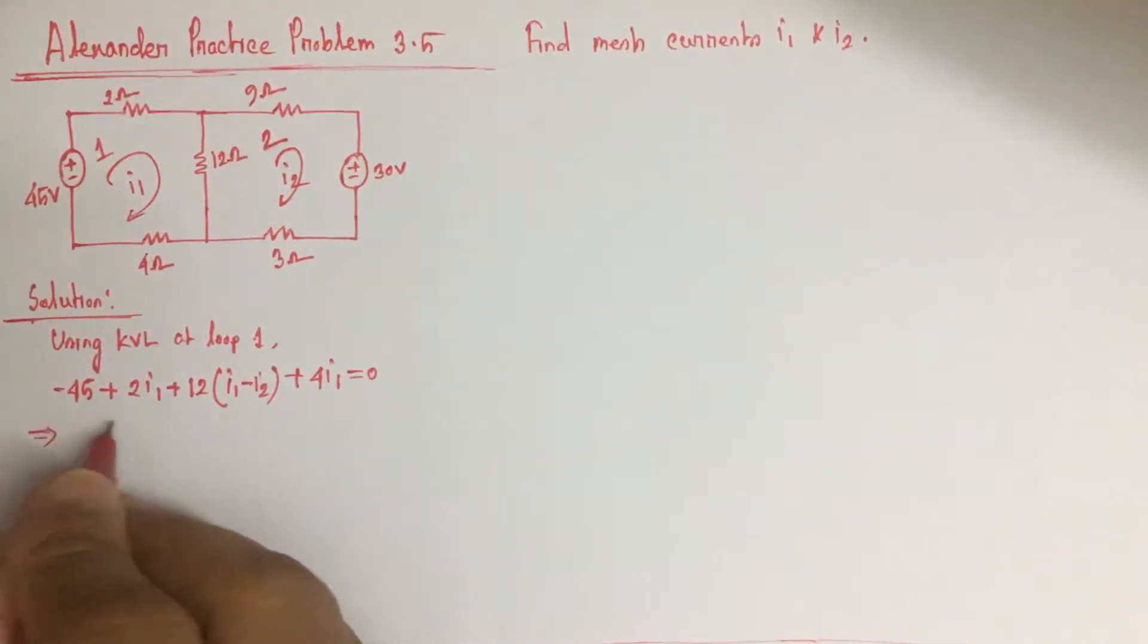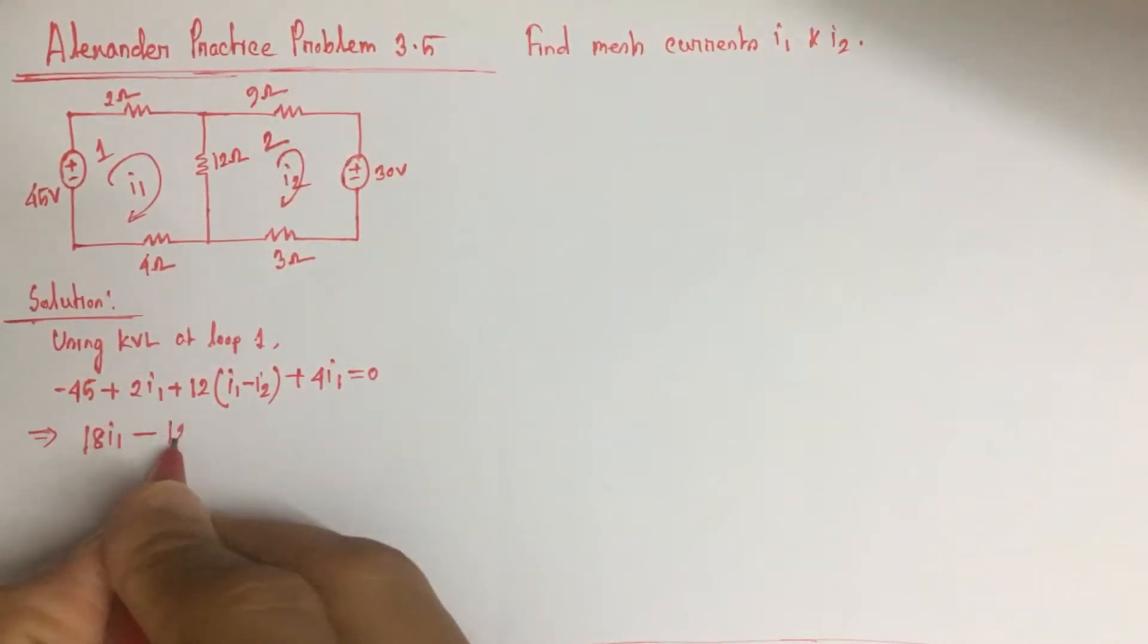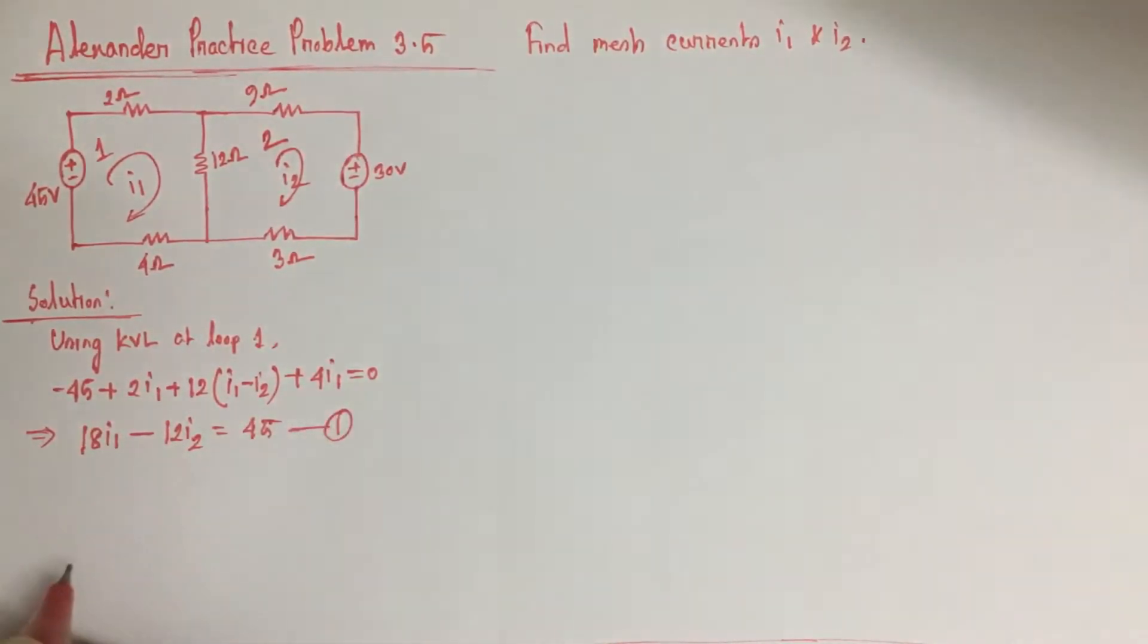Simplifying the equation, we will have 18I1 minus 12I2 equals 45. Let this be equation 1.